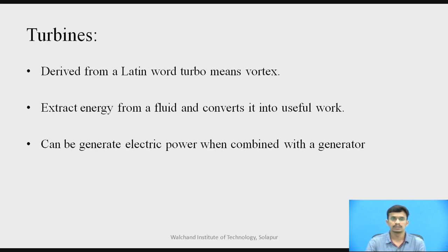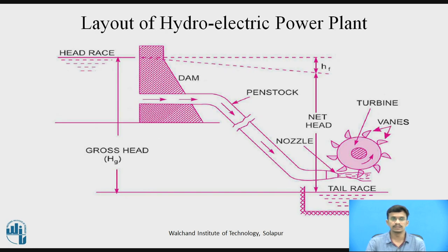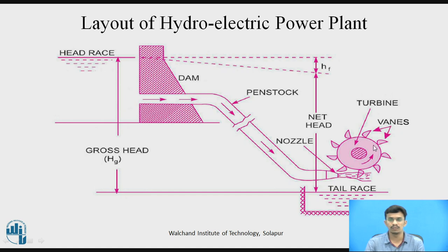The word turbine is actually derived from the Latin word 'turbo,' which means vortex. These rotary machines extract energy from the fluid and convert it into useful work. With the help of a turbine, we can generate electric power when combined with generators. In a typical hydroelectric power plant, a dam is constructed across a river bed to increase the potential energy of water by increasing its head. This water with high potential energy is transferred through the penstock and applied to the vanes of the turbine with the help of a nozzle. As the stream strikes the vanes of the turbine, the turbine rotates on its shaft, converting mechanical energy to electrical energy, which is then transferred through cables or wires.